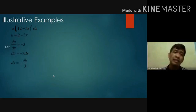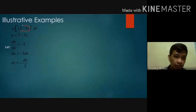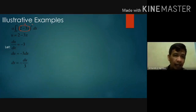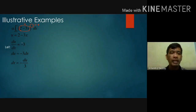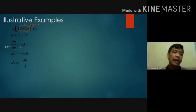For the first example, we have the definite integral from 0 to 1 of (2 minus 3x) to the third power dx. Let u equal 2 minus 3x. Differentiating, du is equal to negative 3 dx. By dividing both sides by negative 3, we get dx equals negative du over 3.